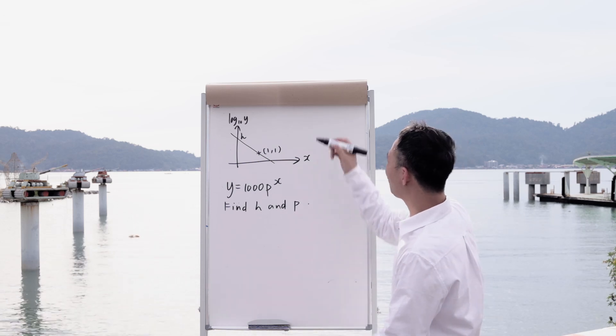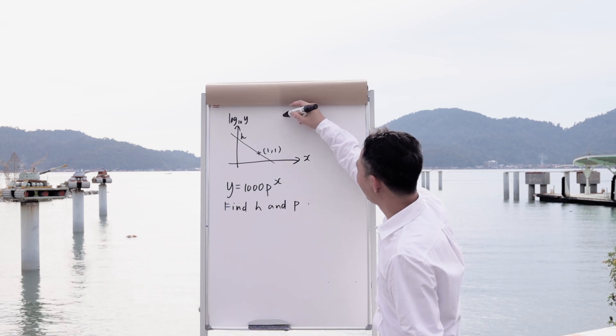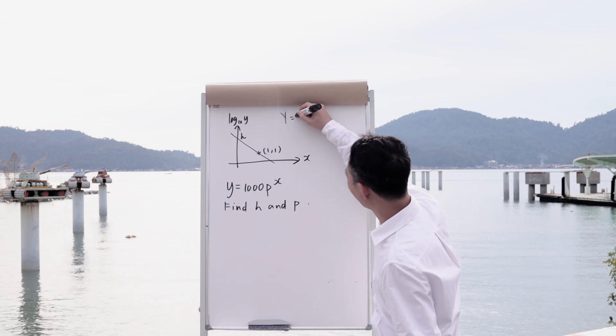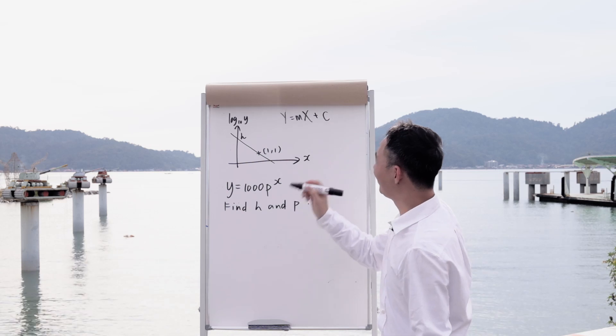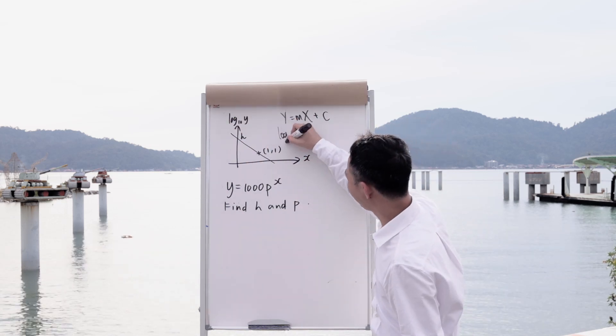So that means straight line, we have a formula for straight line which is y equals mx plus c. So my y, I will have y equals mx plus c. Okay, in this case what is my y from the graph? I understand y will be log 10y.